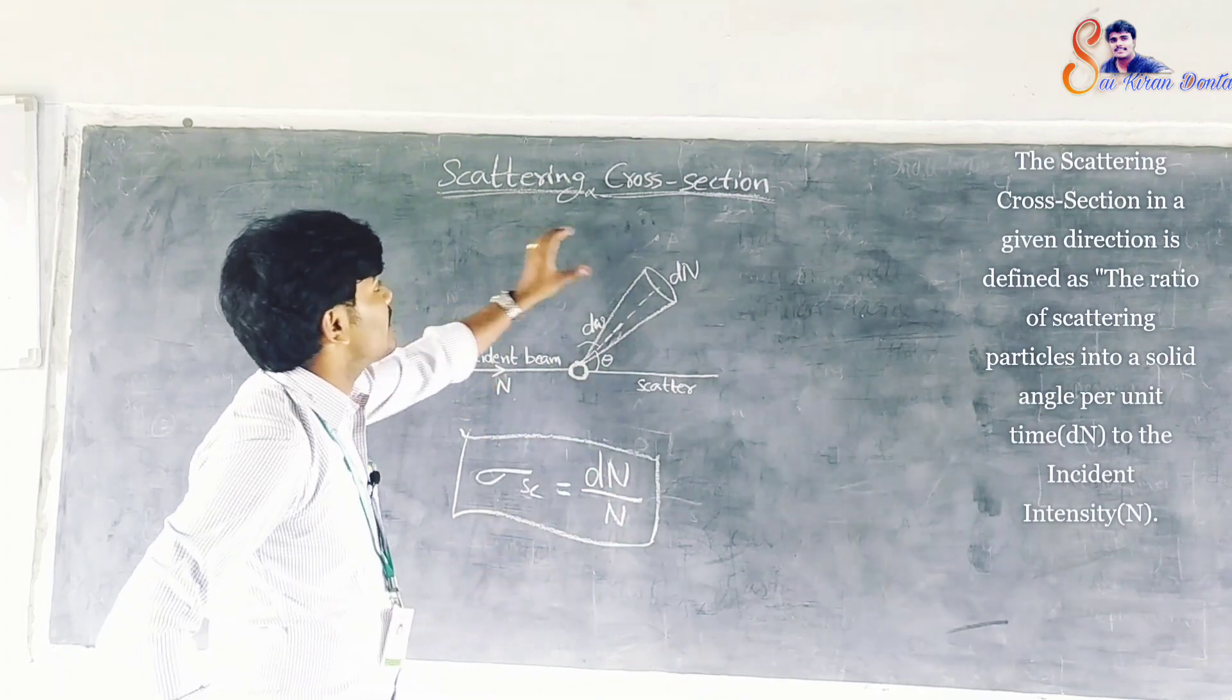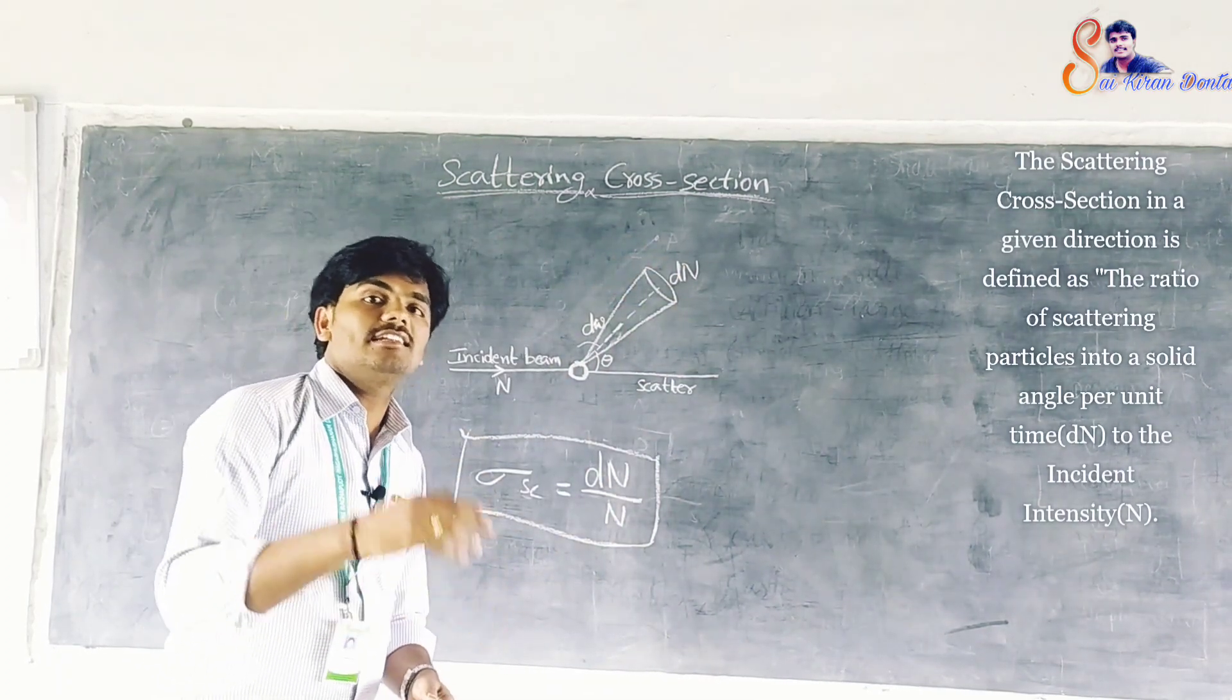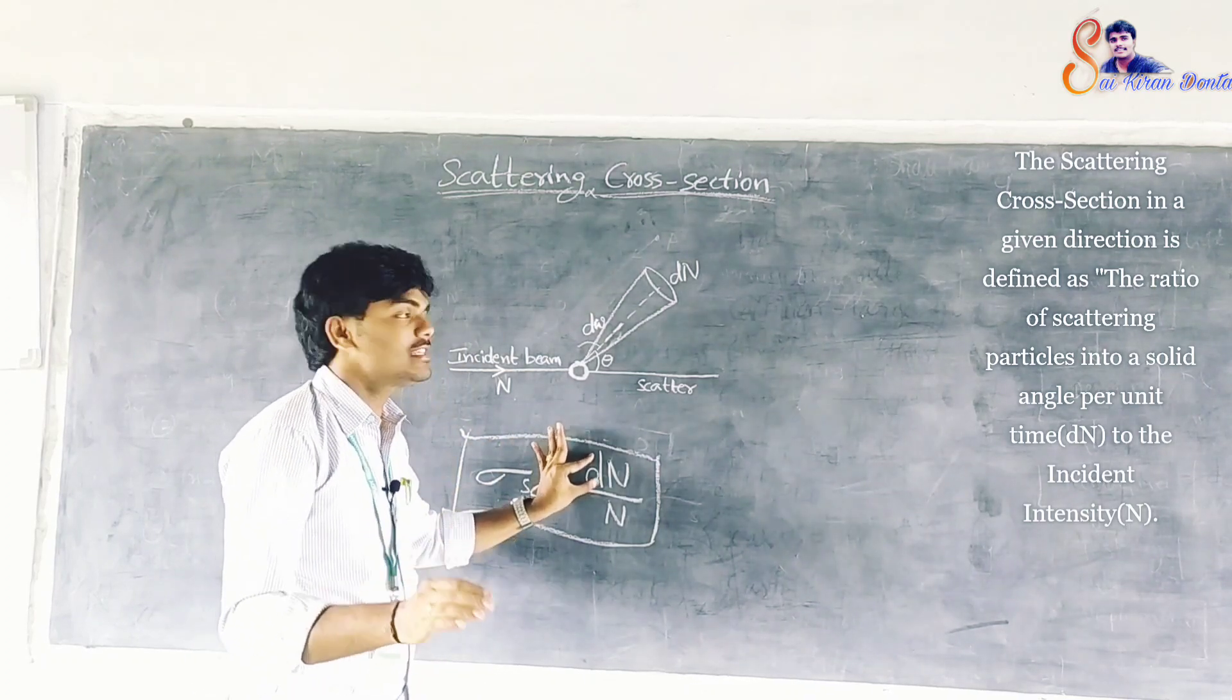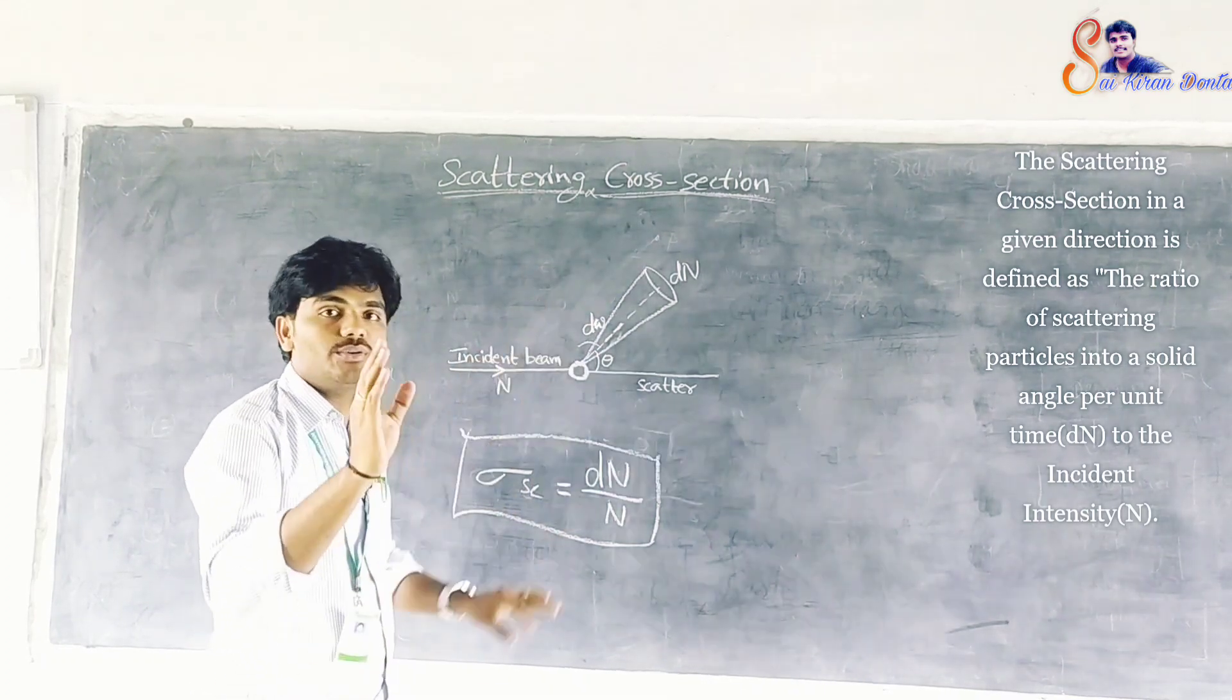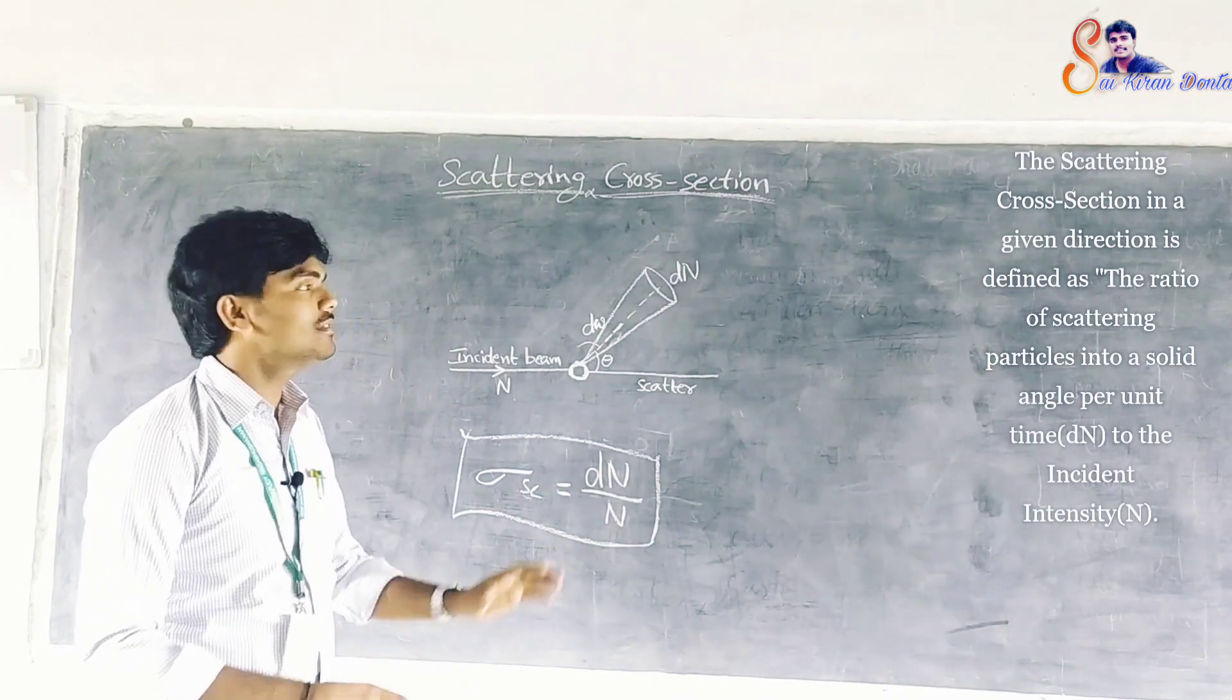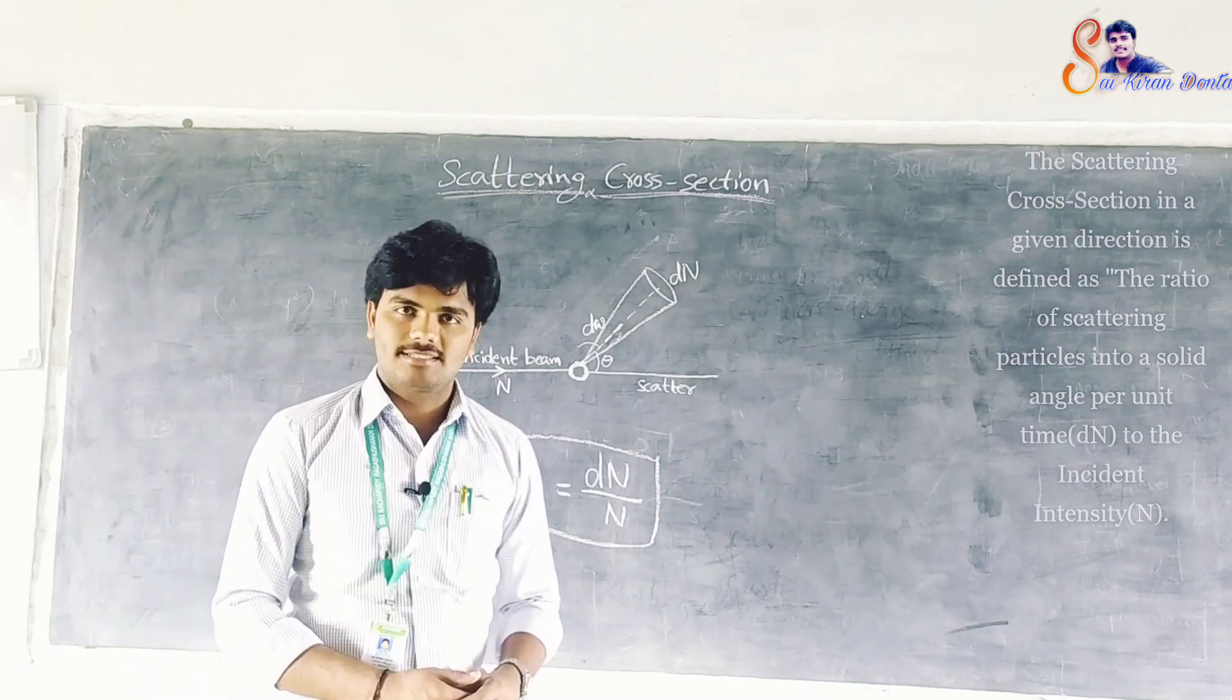Thus, the scattering cross section in a given direction is defined as the ratio of number of scattering particles into a solid angle per unit time to the incident intensity N. This is somewhat about the scattering cross section.